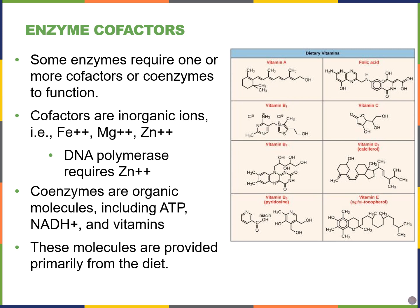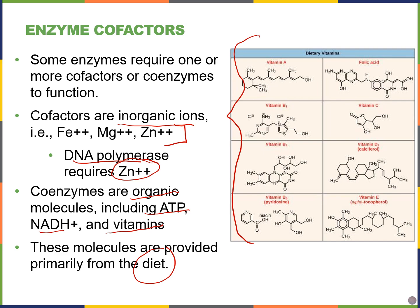Another way to regulate enzyme function is through the presence or availability of cofactors and coenzymes. Most enzymes require some kind of cofactor or coenzyme to function properly. The difference between cofactors and coenzymes is whether they are organic or not. Cofactors are usually inorganic ions, like various metals. One example is DNA polymerase, an enzyme that produces DNA, which requires zinc as a cofactor. Coenzymes are similar but are organic molecules — usually a metal bonded to a carbon-containing organic molecule — and these include ATP, NADH, and different vitamins we get from our diet.